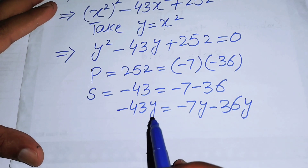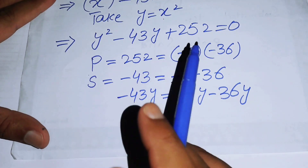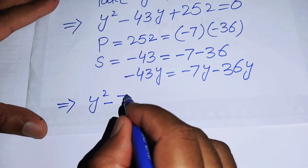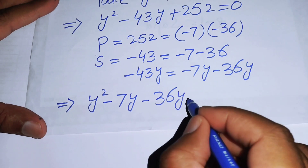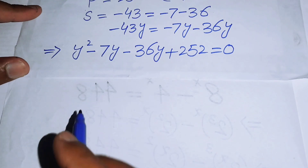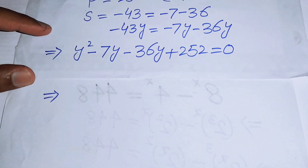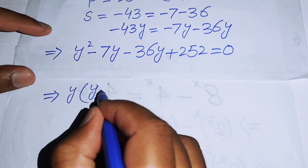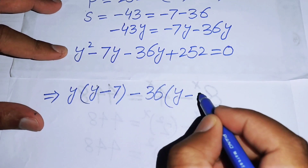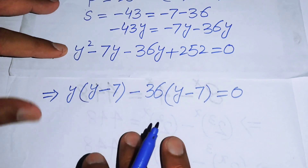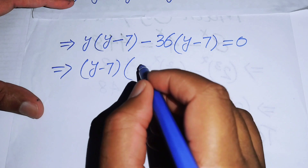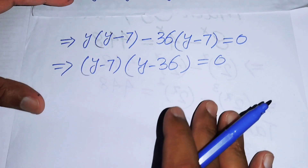Substituting -43y = -7y - 36y into the equation gives y² - 7y - 36y + 252 = 0. Taking y common from the first two terms gives y(y - 7), and taking -36 common from the last two terms gives -36(y - 7) = 0.